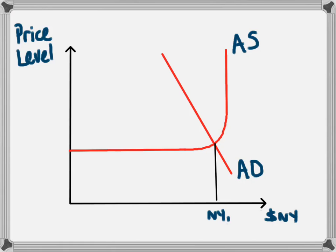It leads to an aggregate supply curve which looks like this and a downward sloping aggregate demand curve.